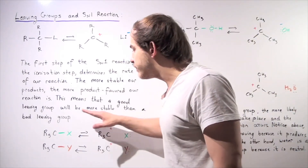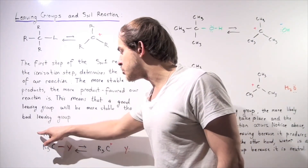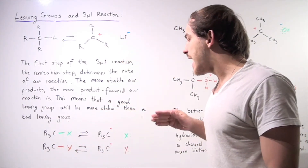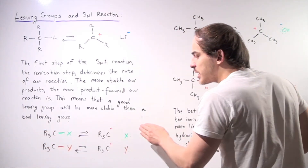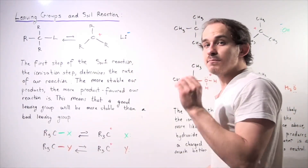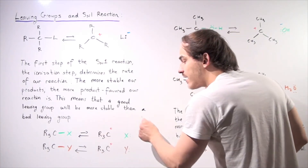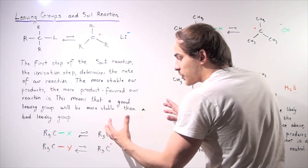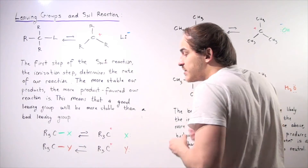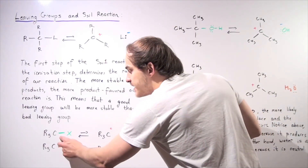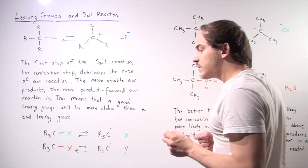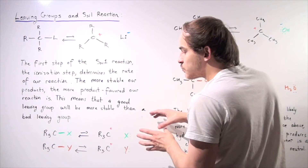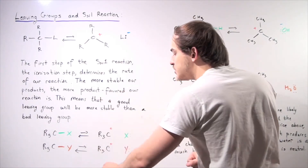Suppose we have two reactions: one substrate with X as the leaving group and another substrate with Y as the leaving group. If the first reaction is more likely to take place, that means its products are more stable than the reactants — these two molecules together are more stable. That also means X is a better leaving group than Y, because X is more stable than Y when they have detached from the carbocation.